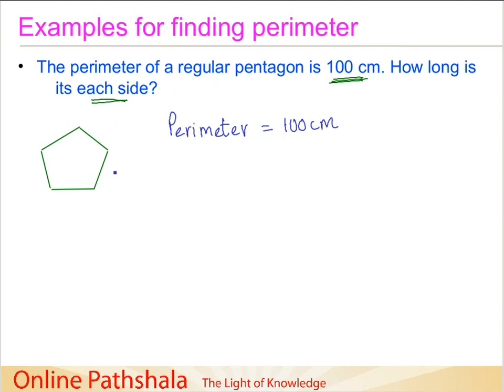Now we want to find out the side. Let's just say that the side is L. Now we know that a regular pentagon means that the length of all the sides is going to be equal and it's a pentagon so it has 5 sides. The perimeter for a regular figure is given by N, that is the number of sides, multiplied by the length of a side.